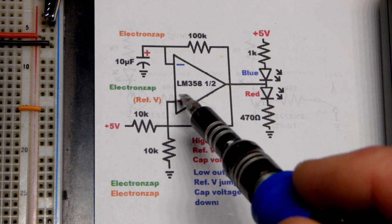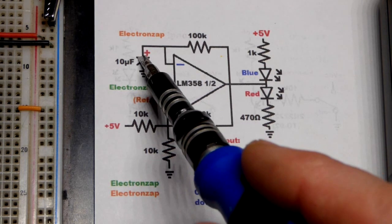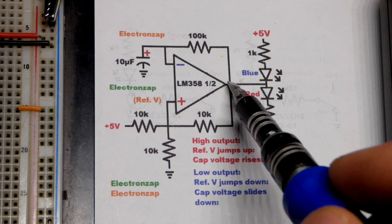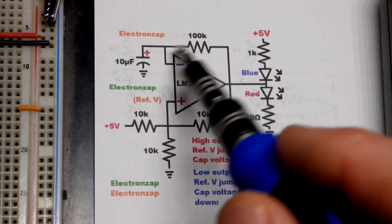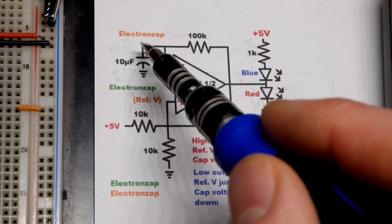So if we have a higher voltage at the non-inverting than the inverting, that means that the capacitor is at a lower voltage. So the output is actually going to charge the capacitor. The values there determine the speed of its charge.